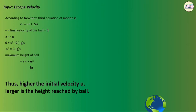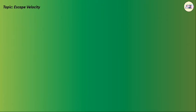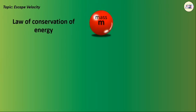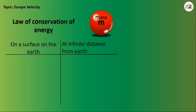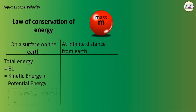We can determine the value of escape velocity using the law of conservation of energy. For an object of mass m on the surface of the earth, total energy E1 equals kinetic energy plus potential energy, which is ½mv²ₑₛcₐₚₑ - GMm/R.